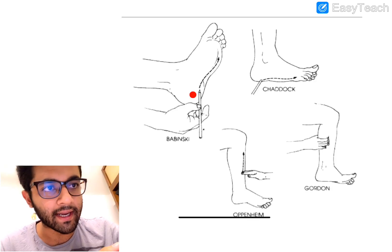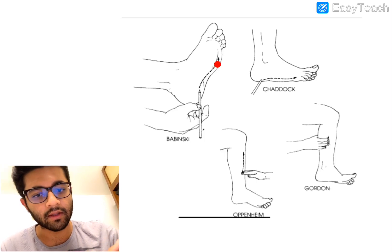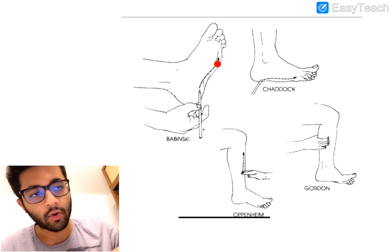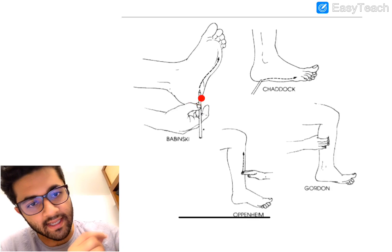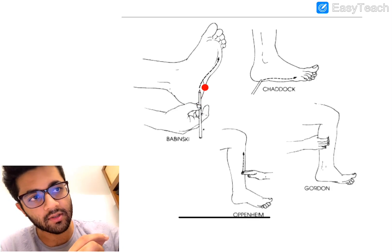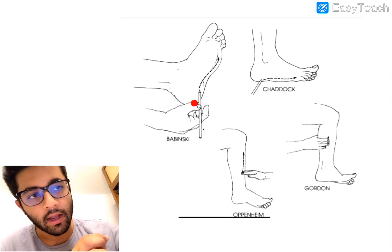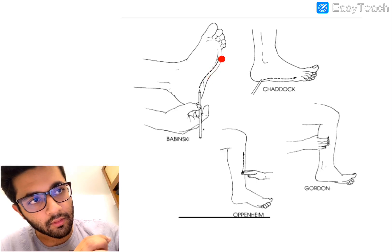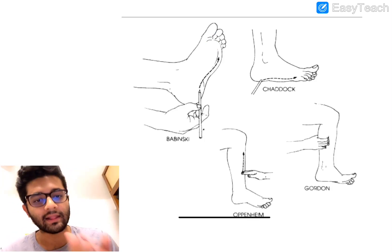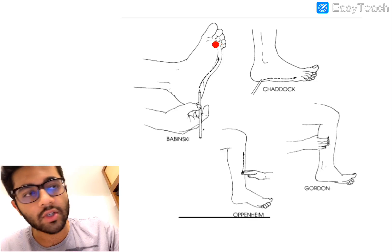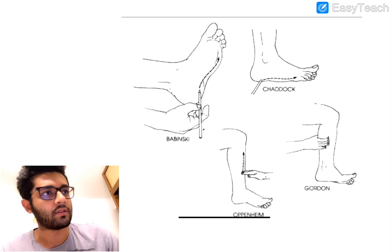Secondly, always go to the far lateral region of the foot. We don't do it medially because the Babinski's afferent nerve is the sural nerve, and the S1 dermatome is what we want to stimulate, which is in the lateral aspect of the foot. Start at the heel and move at a steady and continuous pace — not too fast — along the lateral aspect of the foot, then move medially and stop just before you reach the base of the great toe.